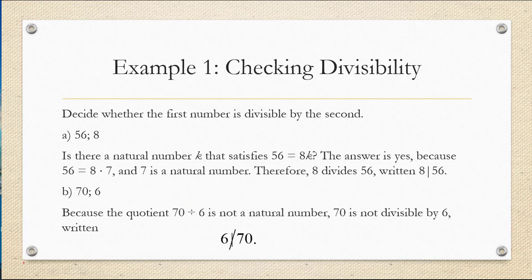So 6 does not go evenly into 70. Another way of saying that is because the quotient 70 divided by 6 is not a natural number, in other words it results in a fraction, 70 is not divisible by 6. And we can write that by crossing off the divisibility symbol. So 6 does not divide 70 could be written like this.